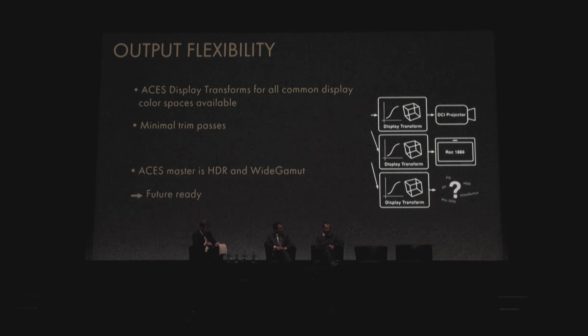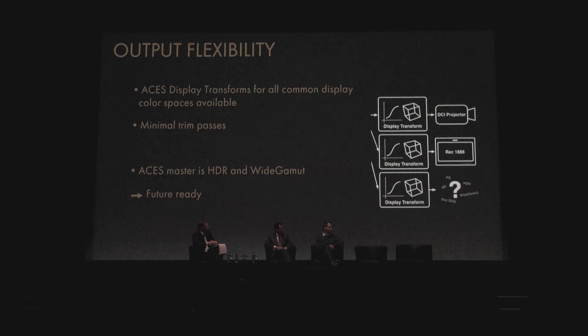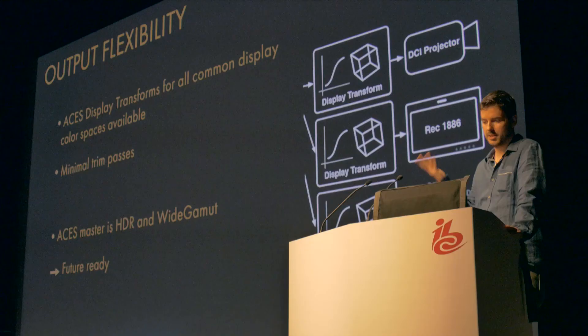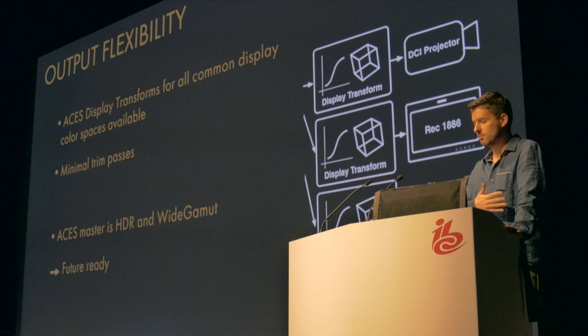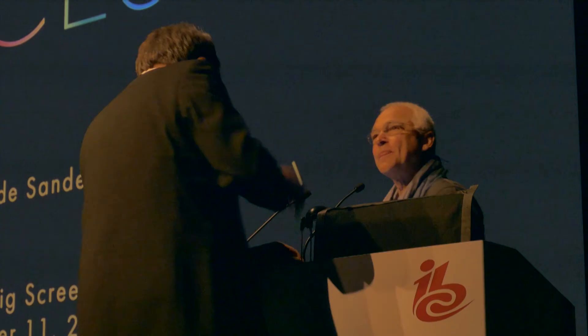The most important thing on the output side is that ACES is an HDR and wide gamut color space. So if you're working on a show today and rendering out an ACES master, and you want to remaster it to HDR in one or two years, you don't have to start from the beginning — the full dynamic range of the camera is still inside the master, you have the full gamut, and nothing is lost. You're not limited to the display you used for the color grading. You'll probably still need to do a trim pass, but you don't have to redo the whole film.